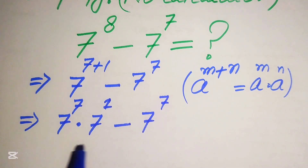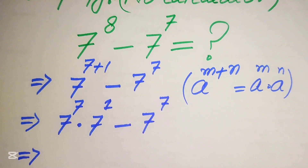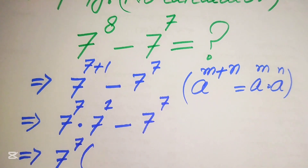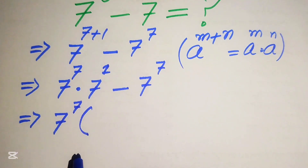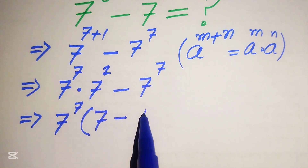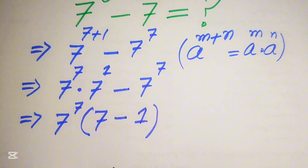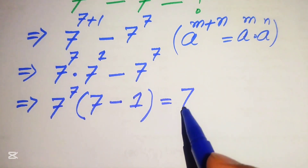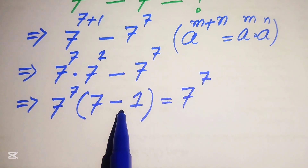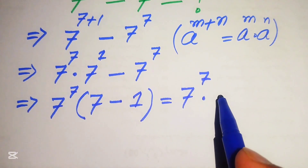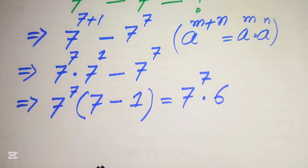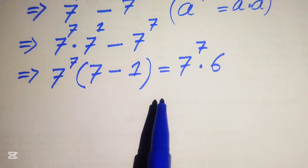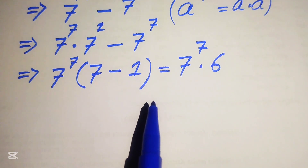Now both terms involve 7 to the power of 7, so we factor out 7 to the power of 7. The remaining terms give us 7 minus 1, which equals 6. So we have 7 to the power of 7 multiplied by 6. Our next target is to find the value of 7 to the power of 7.